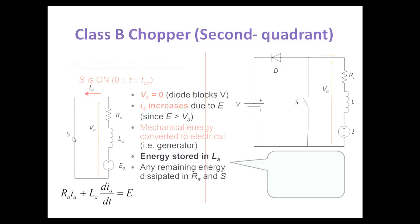When the switch is closed, the load acts as a source, current flows in the reverse direction (I_A), voltage is positive, and the inductor starts charging — inductor current increases. From 0 to T_on, the switch is closed, current flows in the reverse direction, and the inductor stores energy. V_A is zero because the switch is closed and short-circuited. The KVL equation for this mode is: R_A·I_A + L_A·(dI_A/dt) = E.